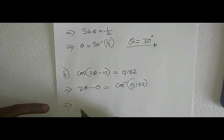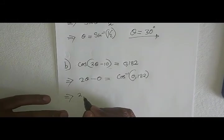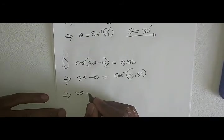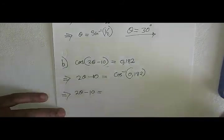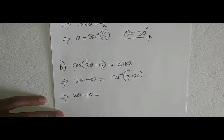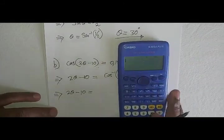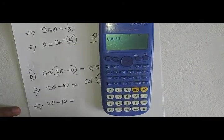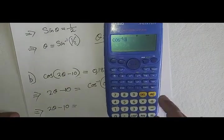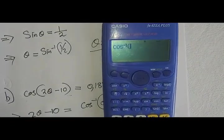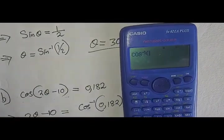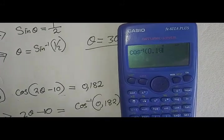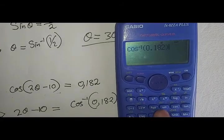Which in this case implies that 2θ minus 10 is equals to - from there we now make use of our calculator. That is to say, it's inverse cos of 0.182, then we close the bracket.